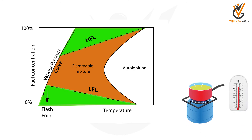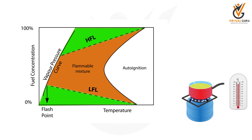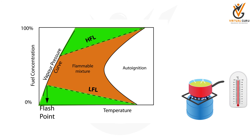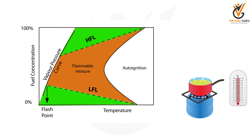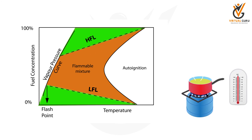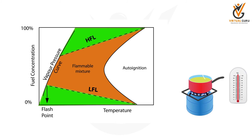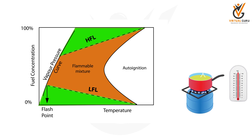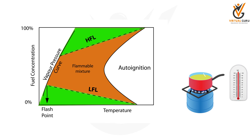The other property is called auto ignition. You might have seen at home that when an oil pan is continuously heated, the oil suddenly catches fire. As you keep on heating, vapors are formed, and the temperature reaches a level where without any external source of spark, it can catch fire spontaneously. This is called auto ignition of that substance.